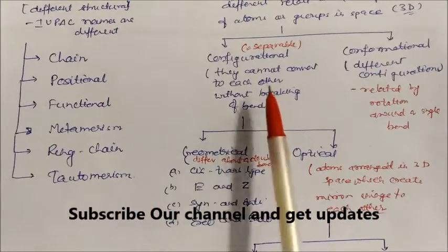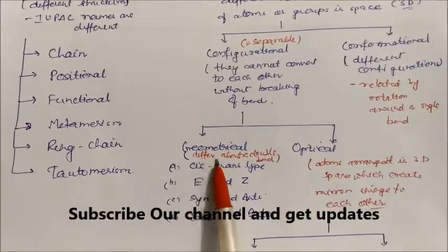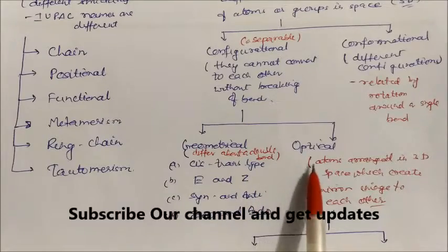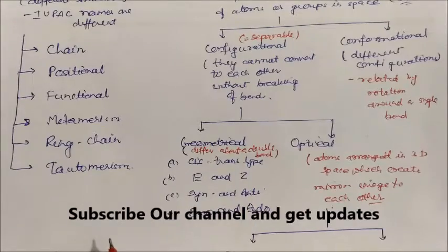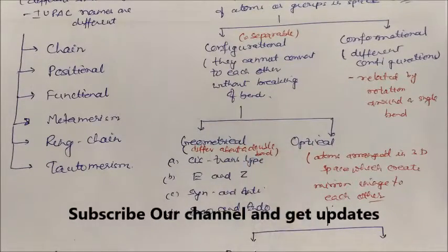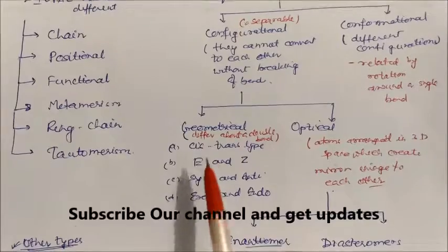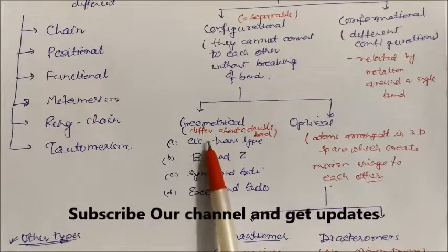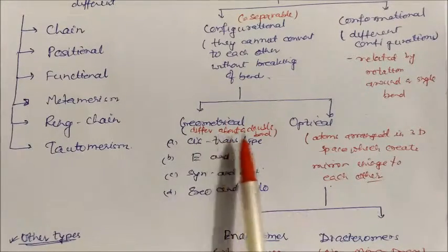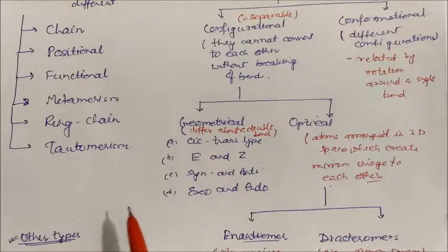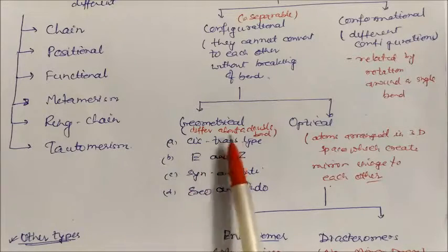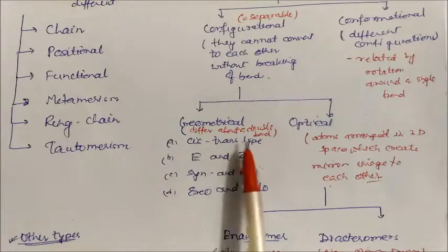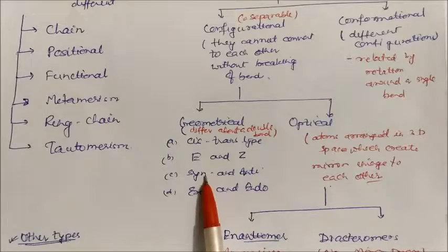Under configurational isomerism, we have geometrical isomerism and optical isomerism. In optical isomerism there is no bond restriction, but in geometrical isomerism there is bond restriction — both are configurational. Geometrical isomers involve double bonds making rotation difficult. There are different nomenclature types: cis-trans, E and Z, and exo and endo. We will discuss these one by one.